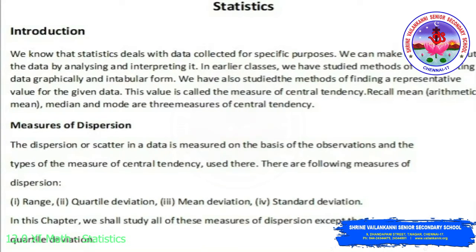Mean, arithmetic mean, median and mode are the three measures of central tendency. So what are measures of dispersion? The dispersion or scatter in data is measured on the basis of the observations and the types of the measure of central tendency used. There are the following measures of dispersion: range, quartile deviation, mean deviation, and standard deviation.